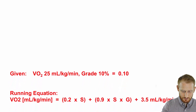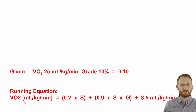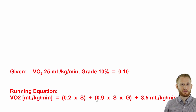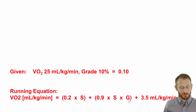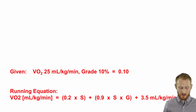The first equation we need to look at is the running equation. The running equation is: VO2 in relative units — milliliters of oxygen per kilogram of body mass per minute — is equal to (0.2 times speed), plus (0.9 times speed times grade), plus 3.5 mL per kg per minute. That 3.5 mL per kg per minute at the end represents the resting component of the exercise.